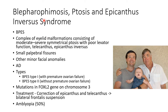Now let us discuss about blepharophimosis ptosis and epicanthus inversus syndrome, abbreviated as BPES. It is a complex of eyelid malformations consisting of moderate to severe symmetrical ptosis with poor levator function, telecanthus, and epicanthus inversus. The baby will have small palpebral fissures. This picture shows a baby with BPES, along with his father and grandfather, both of whom have been treated surgically. BPES is also associated with other minor facial anomalies.